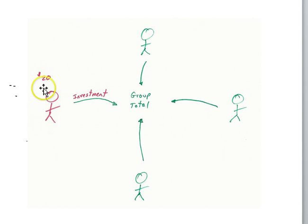So every player will receive a certain amount of money at the beginning of each round, twenty dollars, and you'll have to decide how much of that twenty dollars do you want to invest to what we'll call the group pot, the central pot of money.